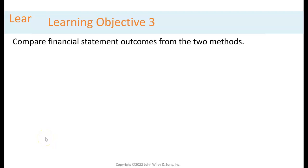This is the second of two presentations on absorption versus variable overhead, and what we're going to do is just compare financial statement outcomes from the two methods. This looks straightforward, but when you go to do it, it can get complicated, so get it really clearly in your head. This will be shorter than the last one.